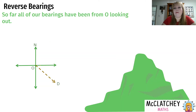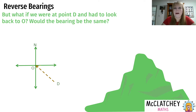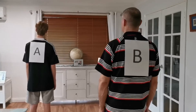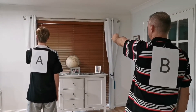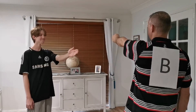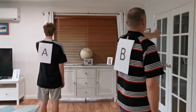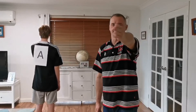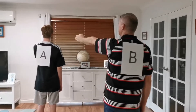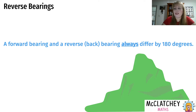So far we've been looking from the origin out to another point, but what if we were at point D and had to look backwards to O? Many students would think the bearing is the same — let's see that it is not. With two points A and B both facing north: point A pointing to B passes through a small angle, while point B pointing back to A passes through 90, 180, 270 degrees. Their angles are quite different.